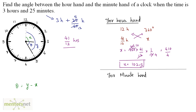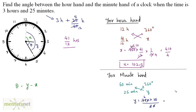Now calculate the angle traced by the minute hand in 25 minutes. For the minute hand: in 60 minutes the angle is 360 degrees, so y = 360 × 25/60 = 150 degrees. Therefore, theta = y − x = 150 − 102.5 = 47.5 degrees. That is the angle between the two hands at 3 hours 25 minutes.